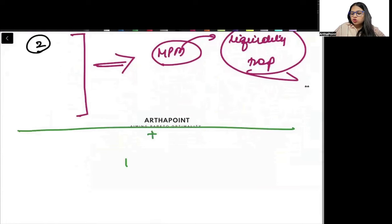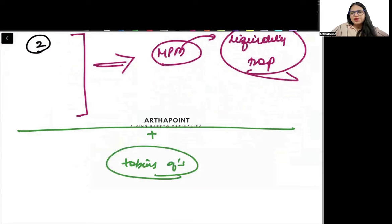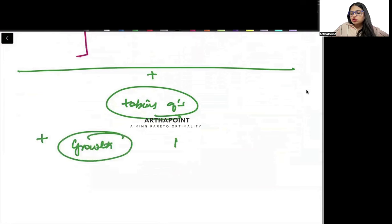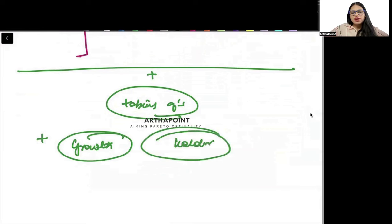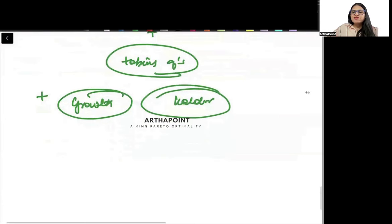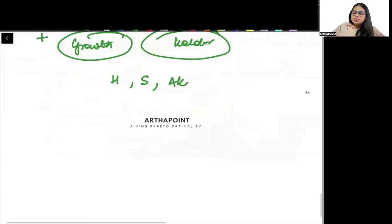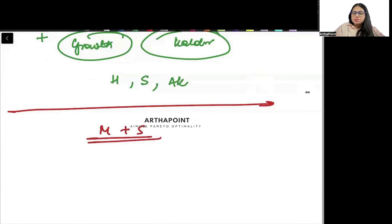This year there can be a question on Tobin's Q, since it did not come last year and it is usually a favorite topic among problem setters. There can also be a question on growth models. Last year there was a question on Kaldor theory, which is not typically on the syllabus, but it came. I would expect that if a question comes, it will be from Harrod-Domar, Solow, or the AK model, since those are the ones explicitly mentioned in the syllabus.